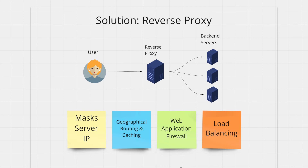Now let's see how it helps with load balancing. Your reverse proxy receives the request from the user first, then decides where to route the request. This means if you have multiple copies of your backend running on multiple machines, you can give the reverse proxy the responsibility to distribute traffic among your backend servers based on the user's IP address and server load. Your client code still only knows the address of the reverse proxy, but the reverse proxy can talk to however many backend servers you have while protecting their addresses.